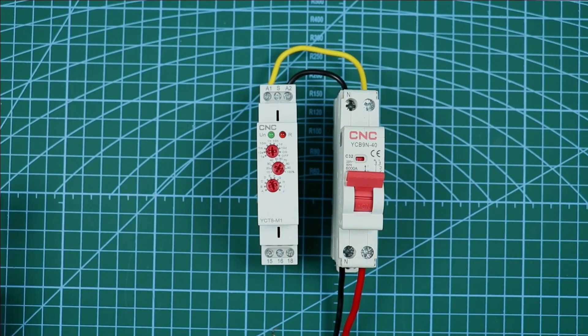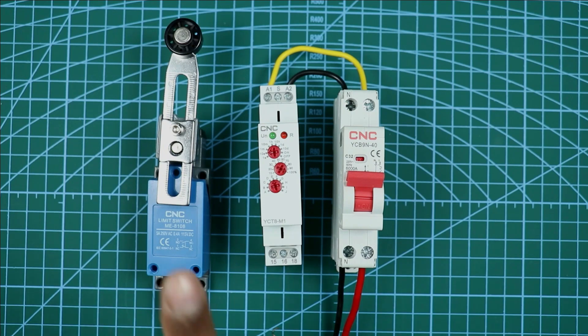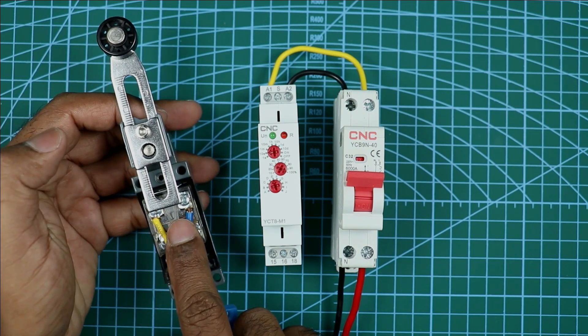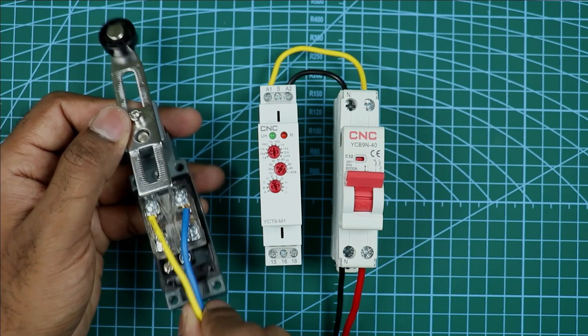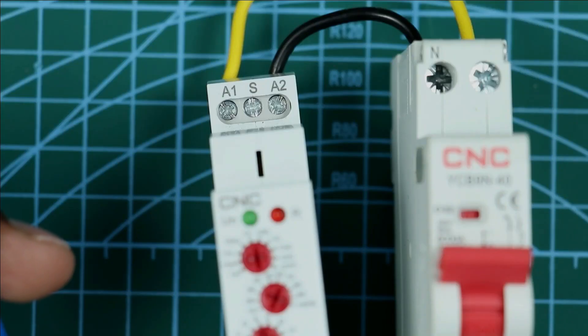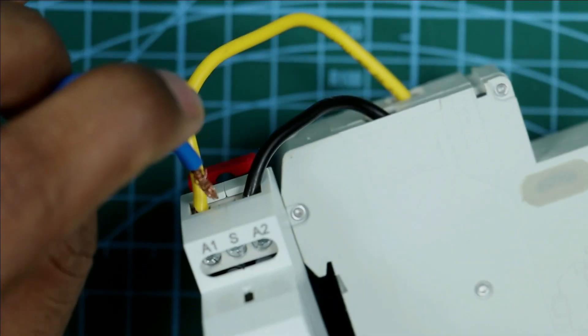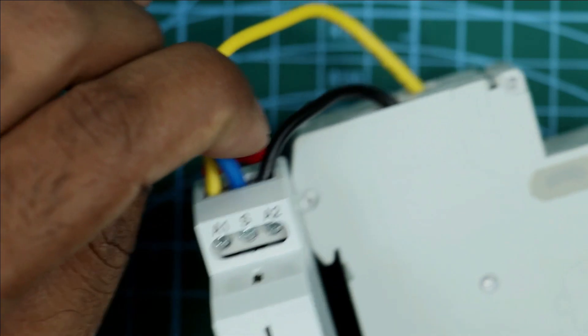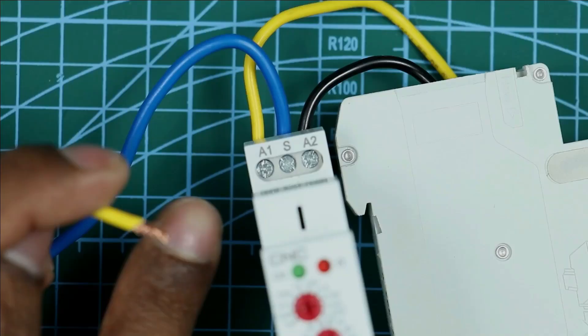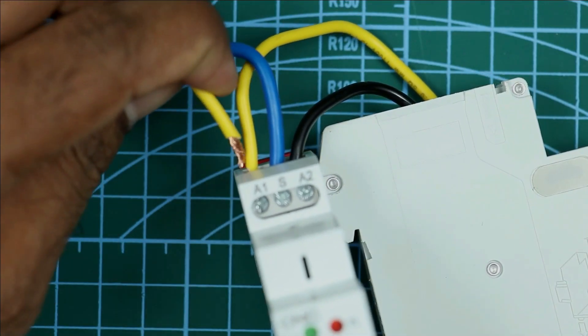Now this timer needs to be operated through limit switch. For this, at the NO contact of this limit switch, connect two wires. I already connected two wires. Connect one of the wire with timer. You can see S terminal on timer. At this S terminal you have to generate signal. So connect this end of wire with this S terminal. Take another wire of limit switch and connect with A1 terminal of the timer.